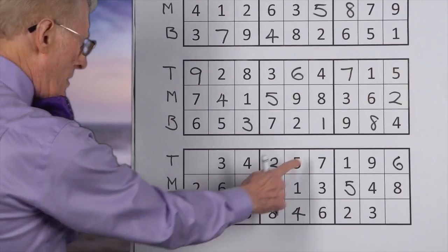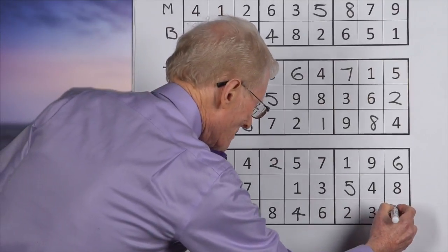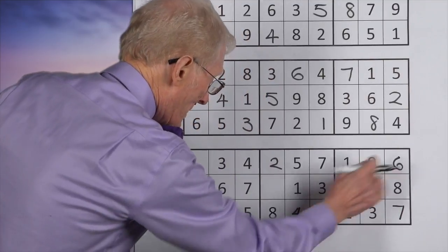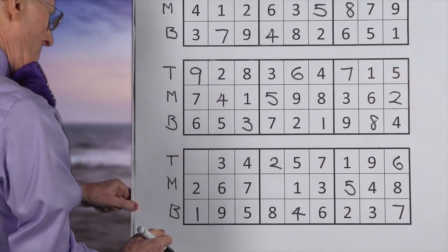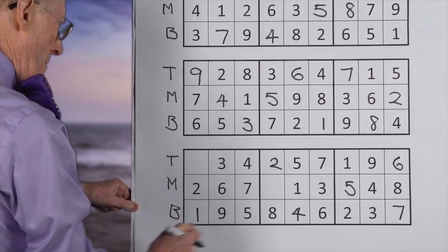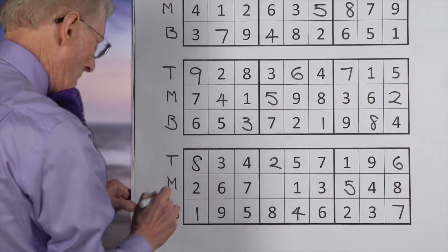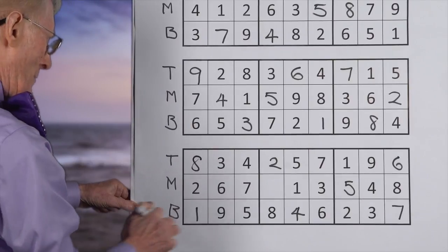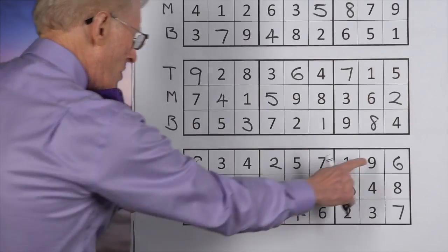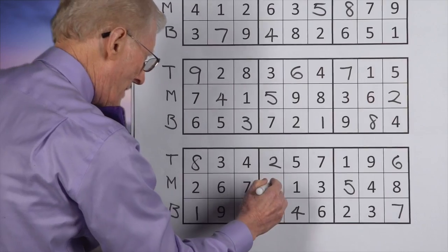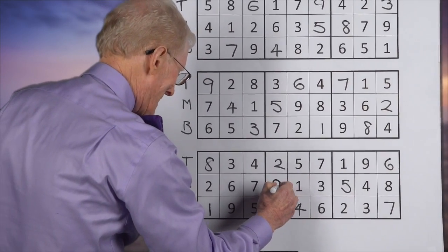Sevens. We have a middle. A top. It has to be on the bottom. Bottom row of that block. And eights. We have a middle. We have a bottom. It has to be up here on the top. And nines. We have a bottom and we have a top. Therefore it has to go there. And believe it or not that's the only place it can go.